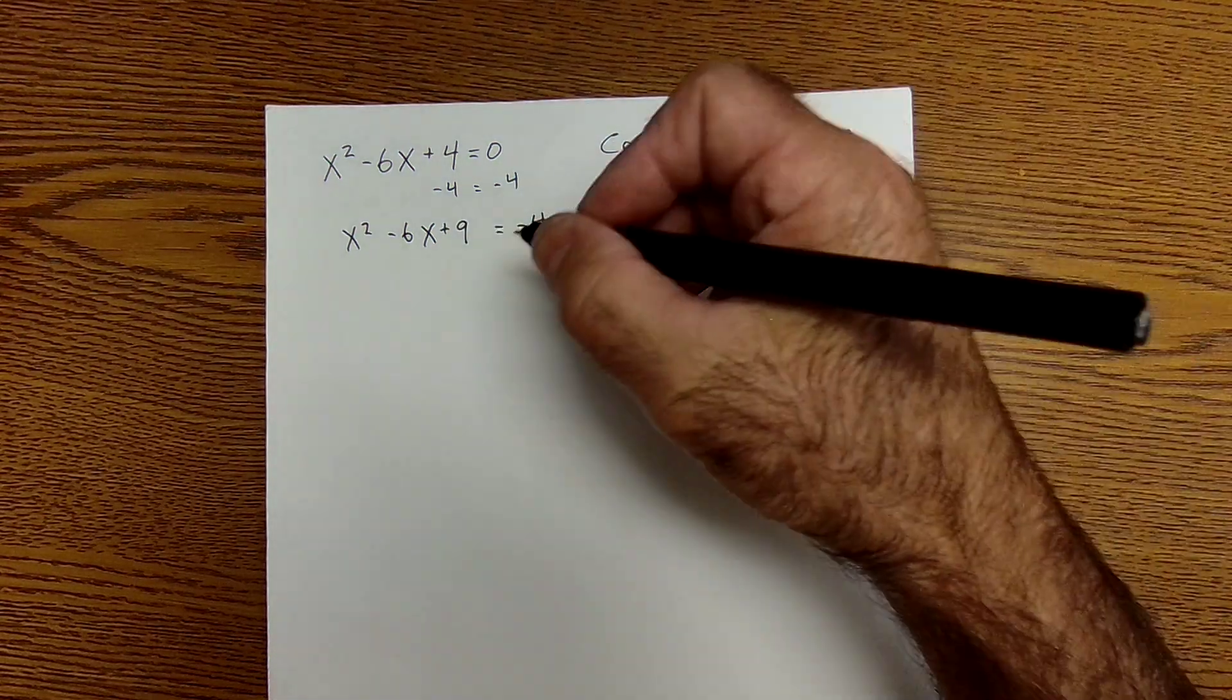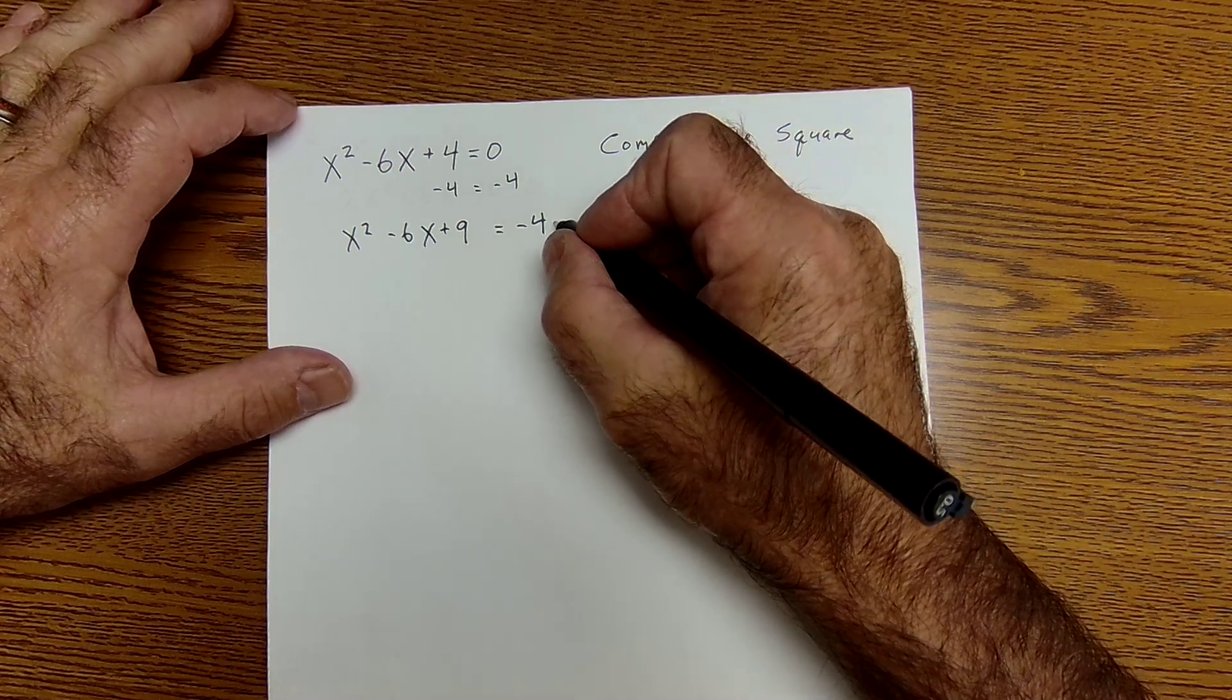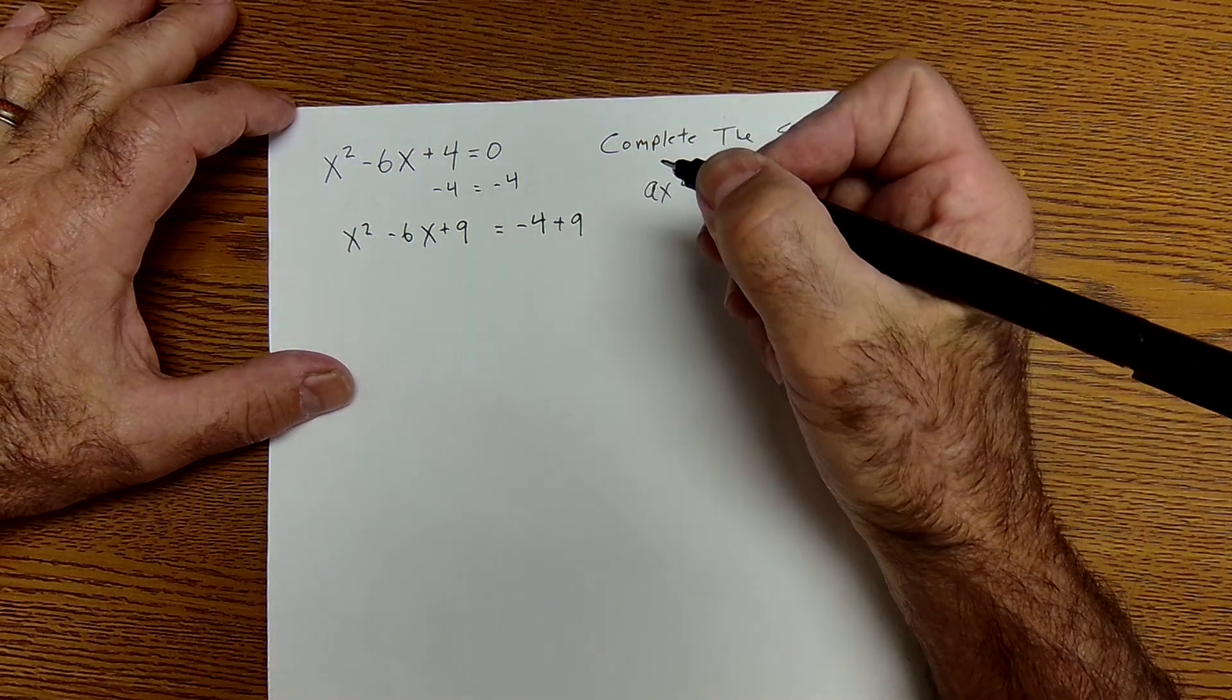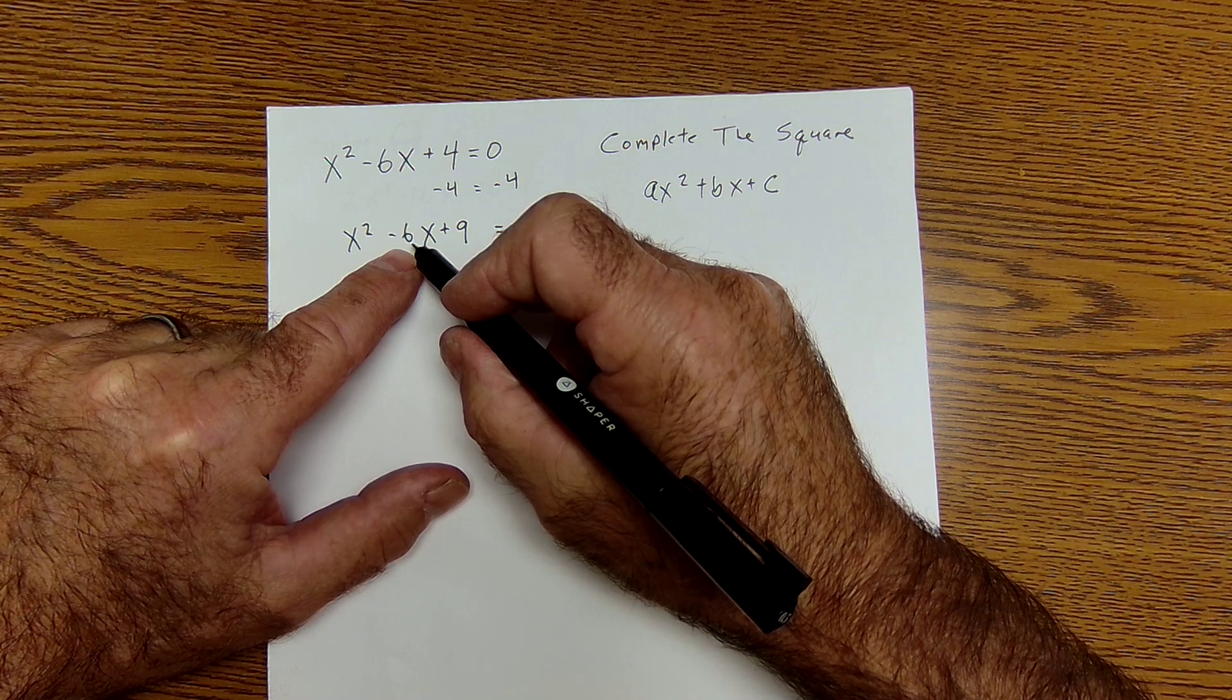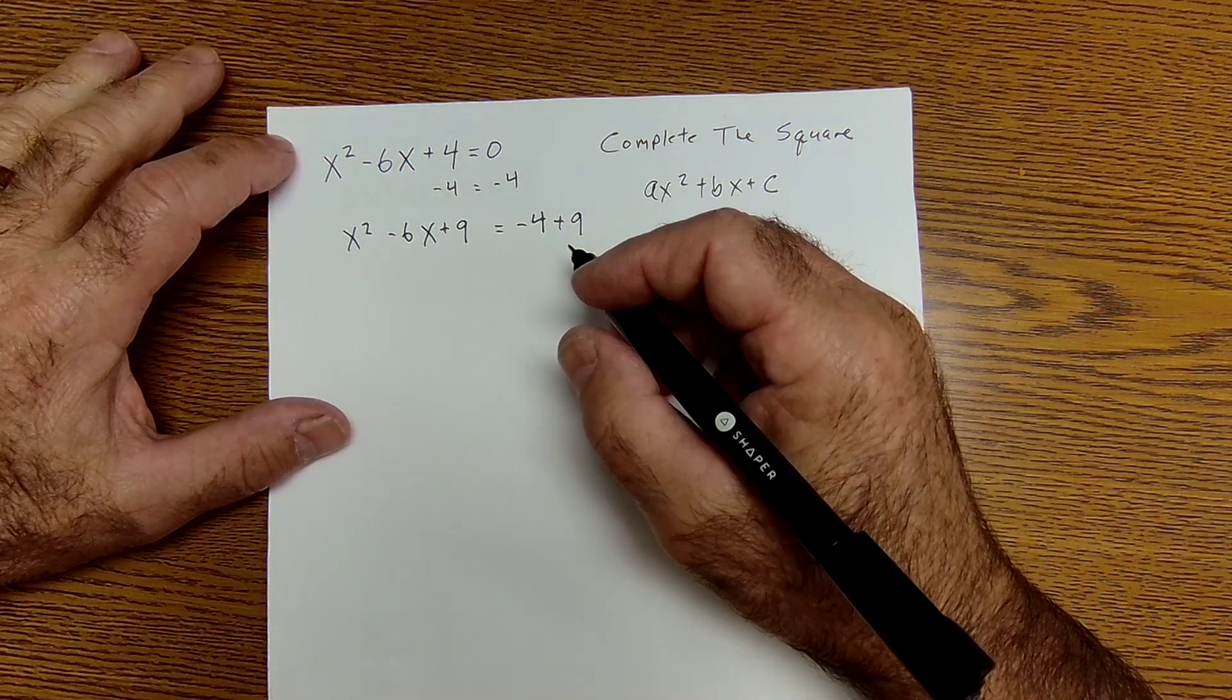I can't just add 9 to the left side without adding 9 to the right side. The whole reason I take half of that B value, negative 3, is so I can get two quantities that are the same.